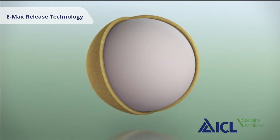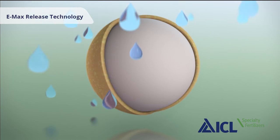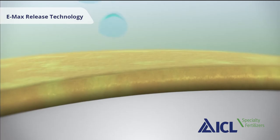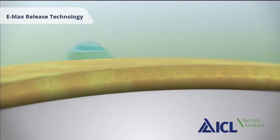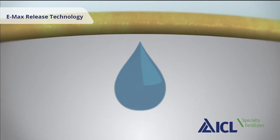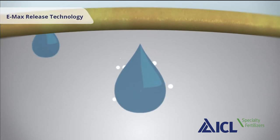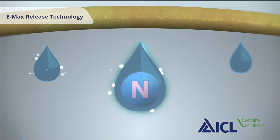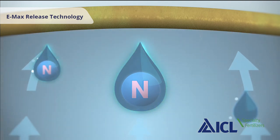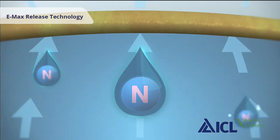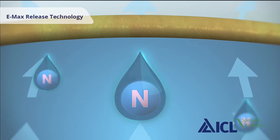Under the influence of soil temperature, moisture penetrates the semi-permeable Emax coating and dissolves the nutrient core. The moisture uptake and dissolution of the nutrient core results in a buildup of osmotic pressure inside the Emax coated granule.